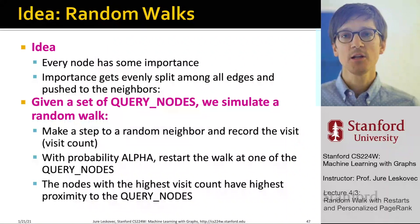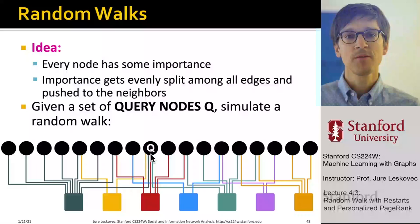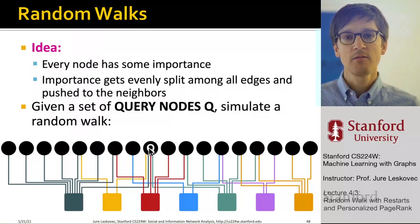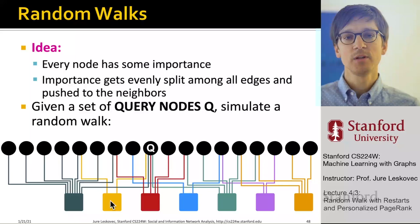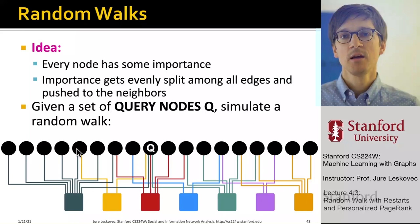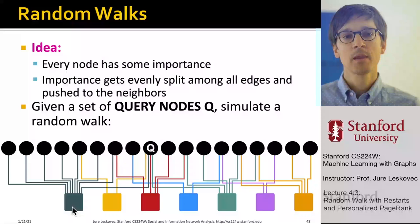Let me show this graphically. We have this bipartite graph, and the query node set Q is simply one node. We simulate the random walk: starting at Q, pick one of its links at random and move to a user. Now at the user, pick one of the links at random, move to the other side, and increase the visit count. Now decide: do I restart — go back to Q — or do I continue walking by picking another link, going back, increasing the visit count, and asking again?